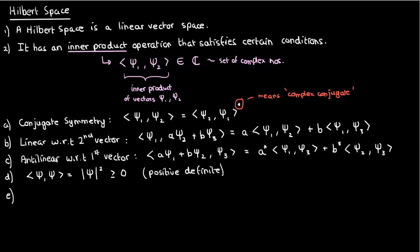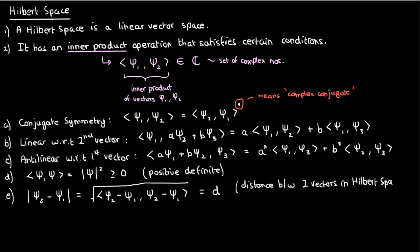Finally, how close two vectors are in Hilbert space is defined according to the distance formula, which is expressed in terms of the inner product. Now this closeness relation or distance formula comes in handy for a later property, which we'll get to soon.